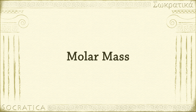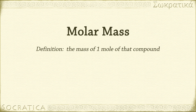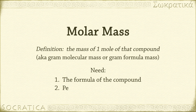Finding the molar mass of a compound is often the first step in more complicated chemistry problems. When we say molar mass, we mean the mass of one mole of that compound. Sometimes it's called the gram molecular mass. I'll also explain what is meant by gram formula mass. That's a lot of terms that all sort of mean the same thing, so it's no wonder people get confused. We'll work through five examples. You'll need the formula of the compound and a periodic table to know the gram atomic mass of each atom.